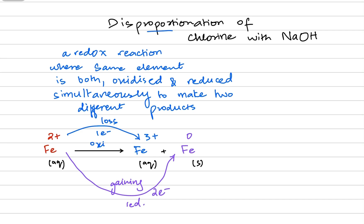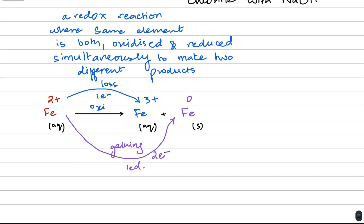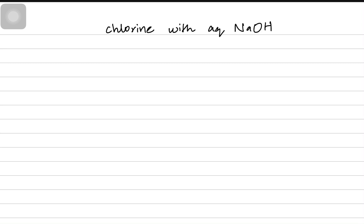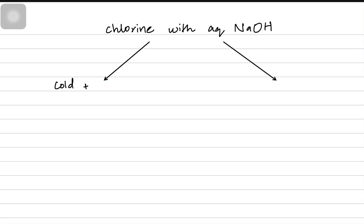When we talk about chlorine, we need to discuss how the system works with chlorine and sodium hydroxide. There are two important scenarios: cold and dilute sodium hydroxide, or hot concentrated sodium hydroxide.